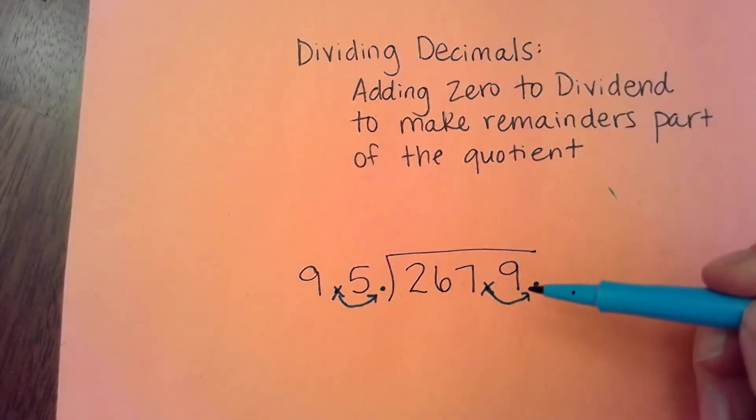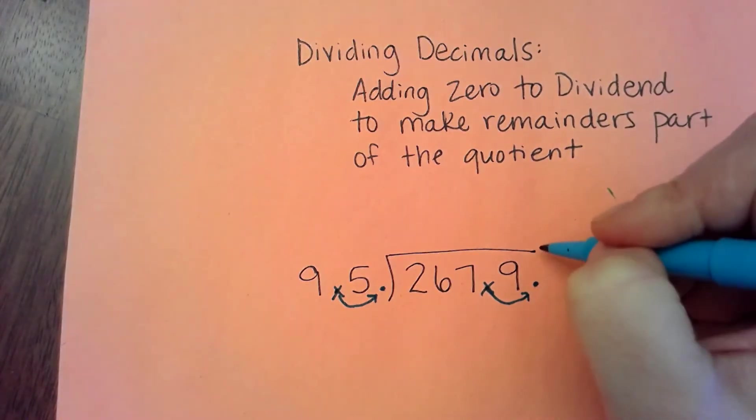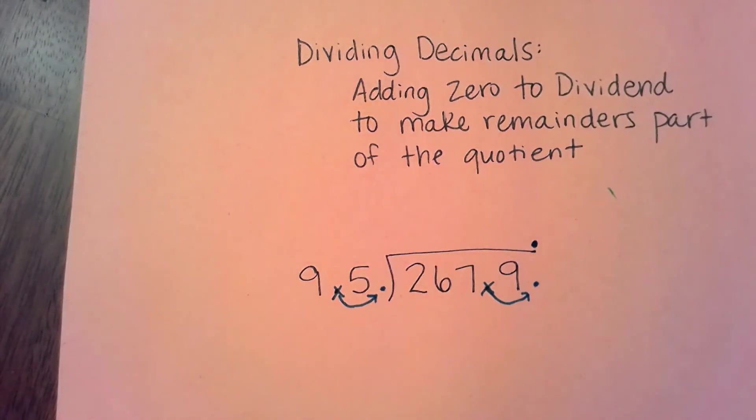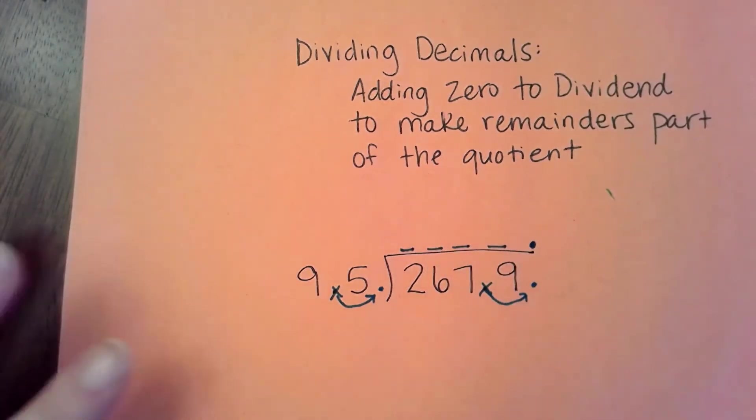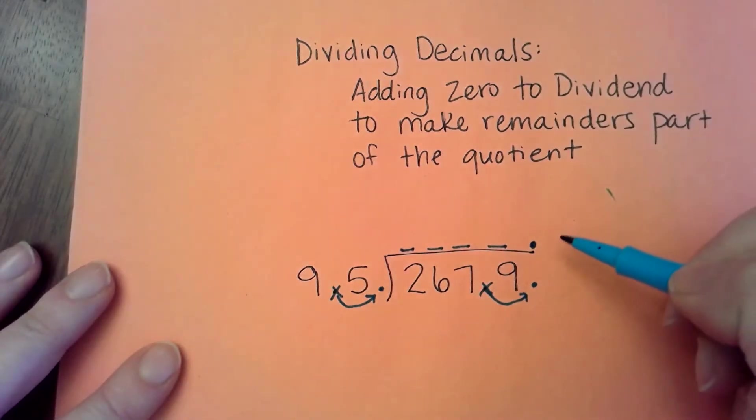Now, whenever I know where that decimal is going to land in my dividend, I let it rock it up and go into my quotient. That's where it's going to sit in my quotient. Now, here's the thing. I don't even know what digit will be here or here or here or here, but I know that the decimal point is going to sit at this location.